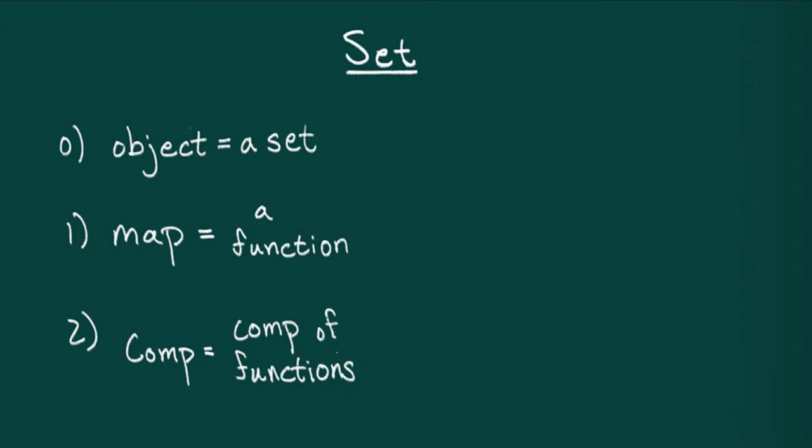It's important when you're first starting out to learn how to rephrase stuff you might know from set theory in terms of a more categorical language. For example, an element of a set is the data of a map from a set with a single element to x. Whenever I have an element of x, I can construct a function which sends the unique point to that element.